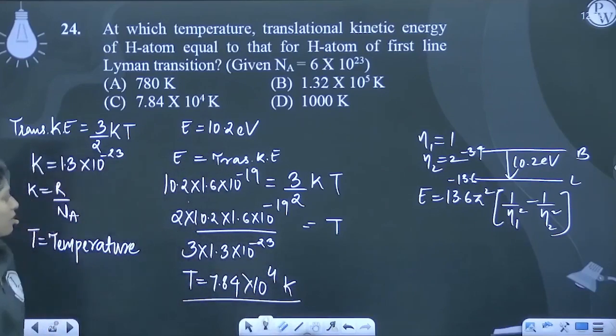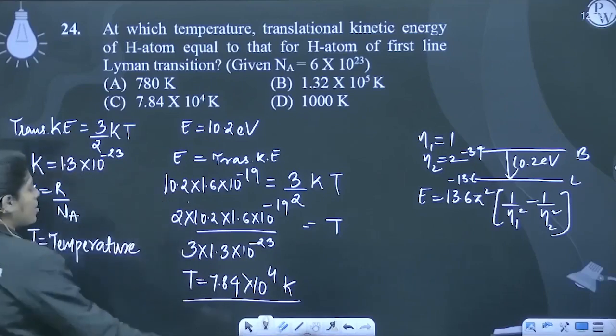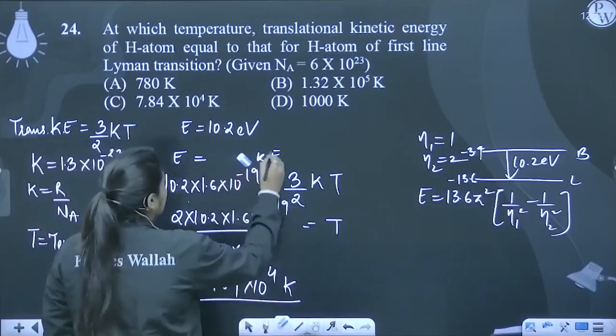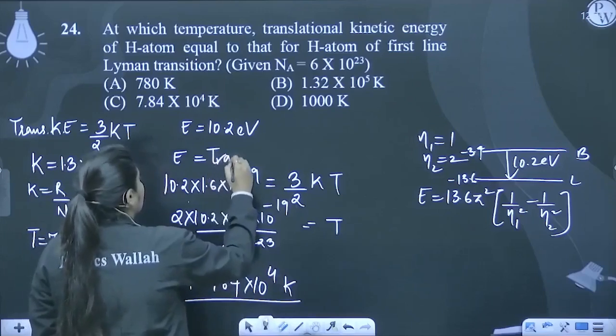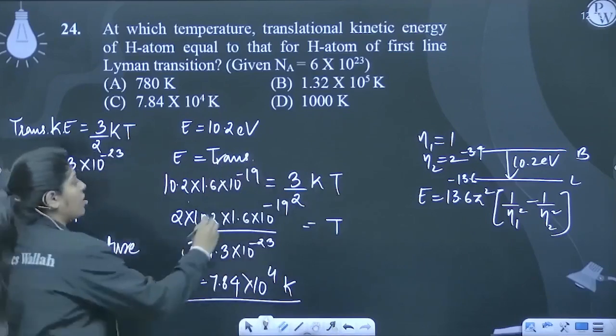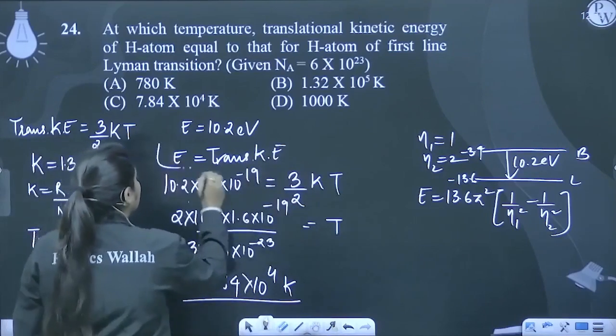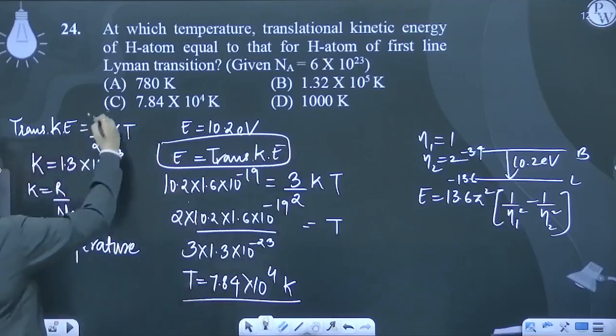So this will solve. We can take root and divide. Basically, what is the energy? Translational kinetic energy to equal. What energy can we equal? Lyman's corresponding energy to equal. Option number 3 is correct.